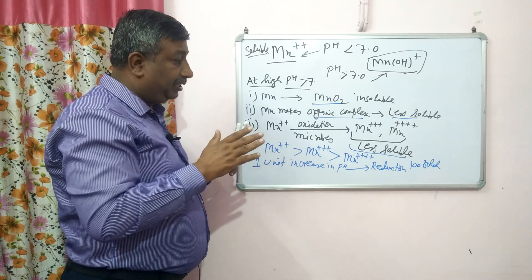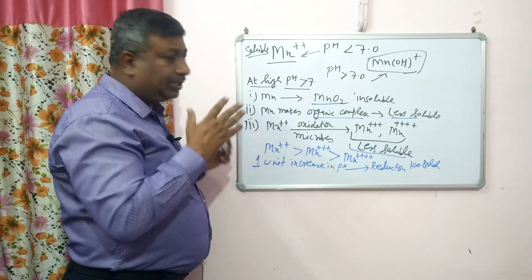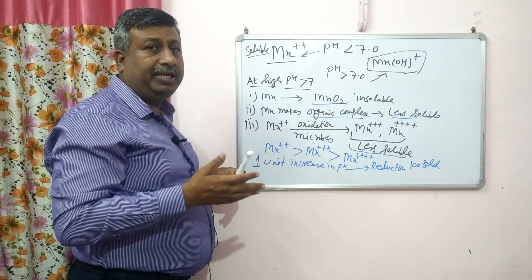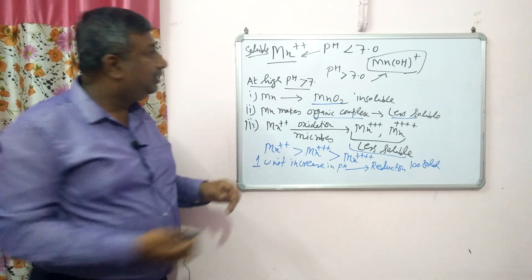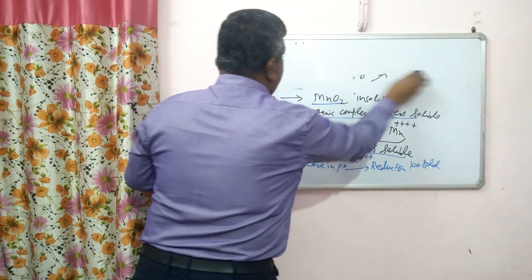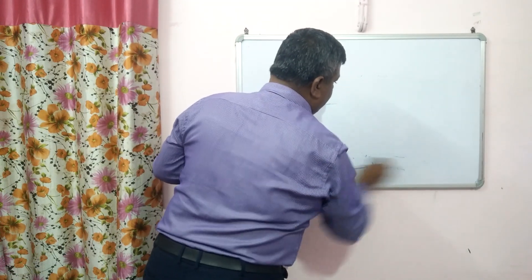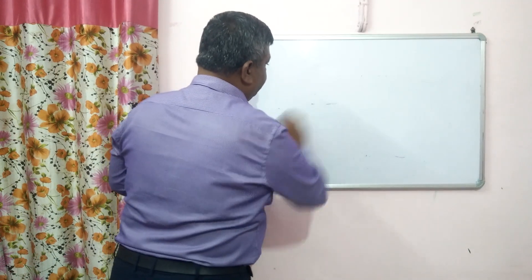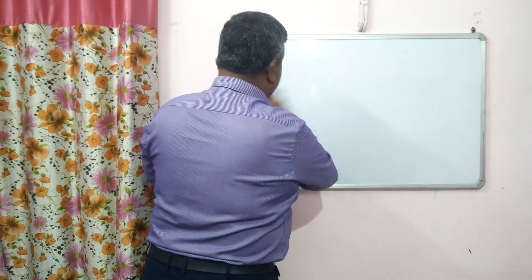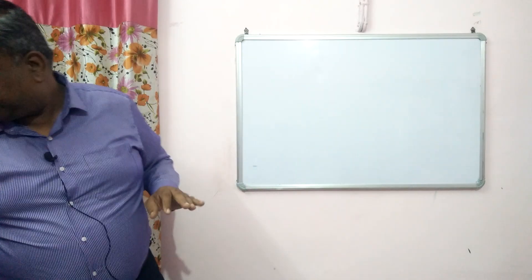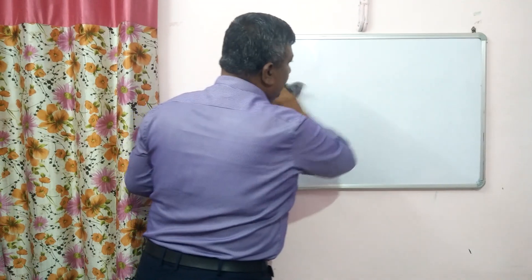This represents the very large impact of pH on manganese. Under acidic conditions, manganese is available, and at high pH it is reduced. Molybdenum's availability is at high pH, not under acidic conditions. Iron, copper, zinc, and manganese are available under acidic conditions, but molybdenum is the only metallic micronutrient which is available at high pH.